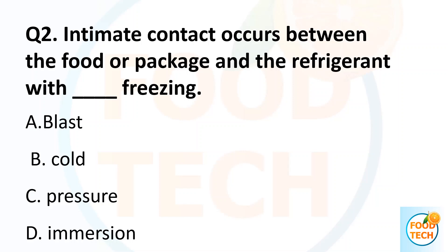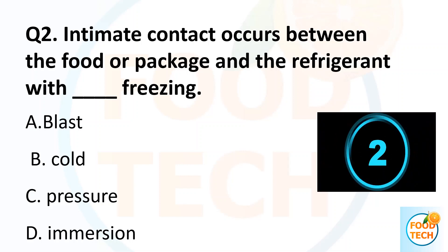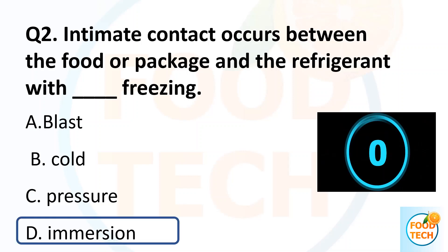Question 2. Estimate the contact that occurs between the food, our package, and the refrigerant with dash freezing. A. Blast. B. Cold. C. Pressure. D. Immersion. Answer D. Immersion.